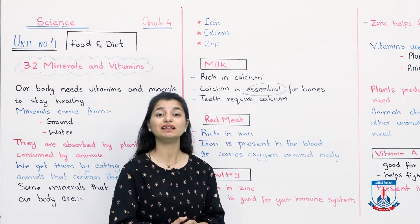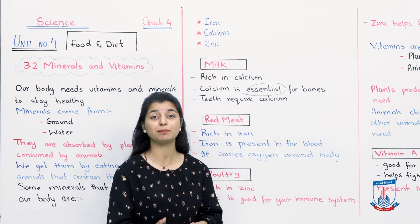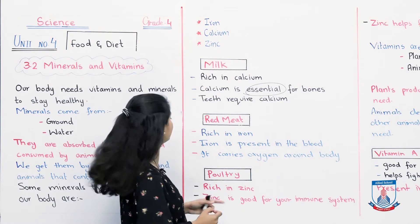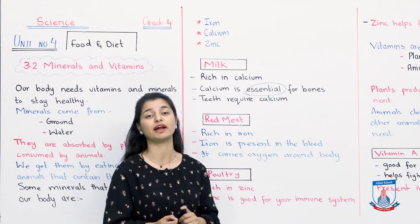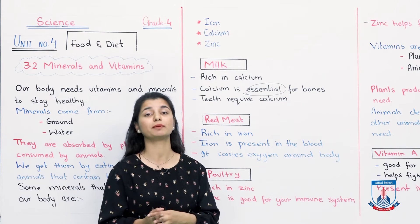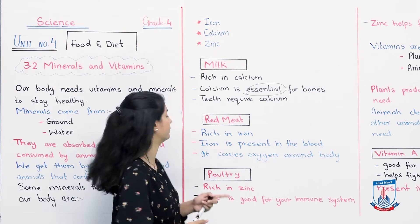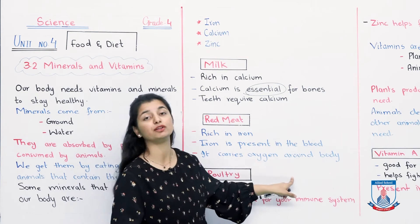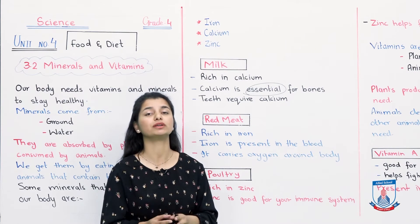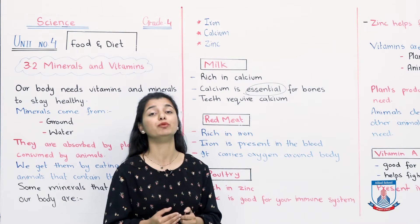Red meat — we talked about it being a very important source of proteins. Now we will see that it is also a very good source of iron. Red meat is rich in iron. Iron is present in the blood and it is a very important component — specifically, it is part of hemoglobin.